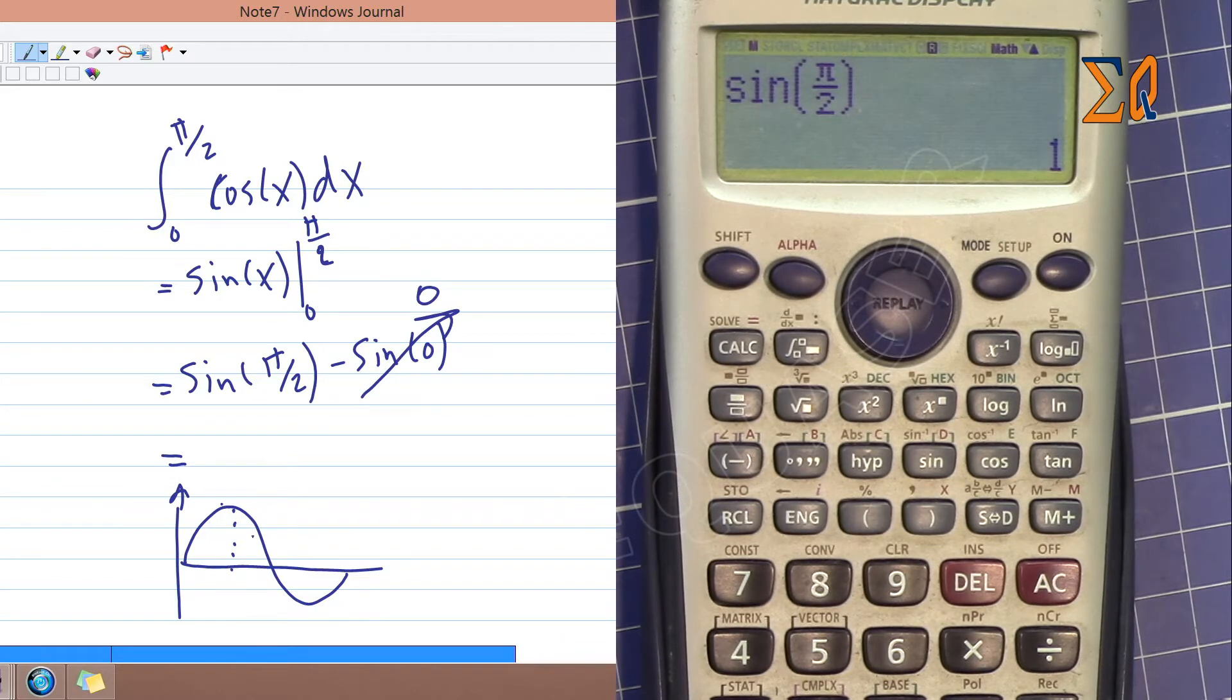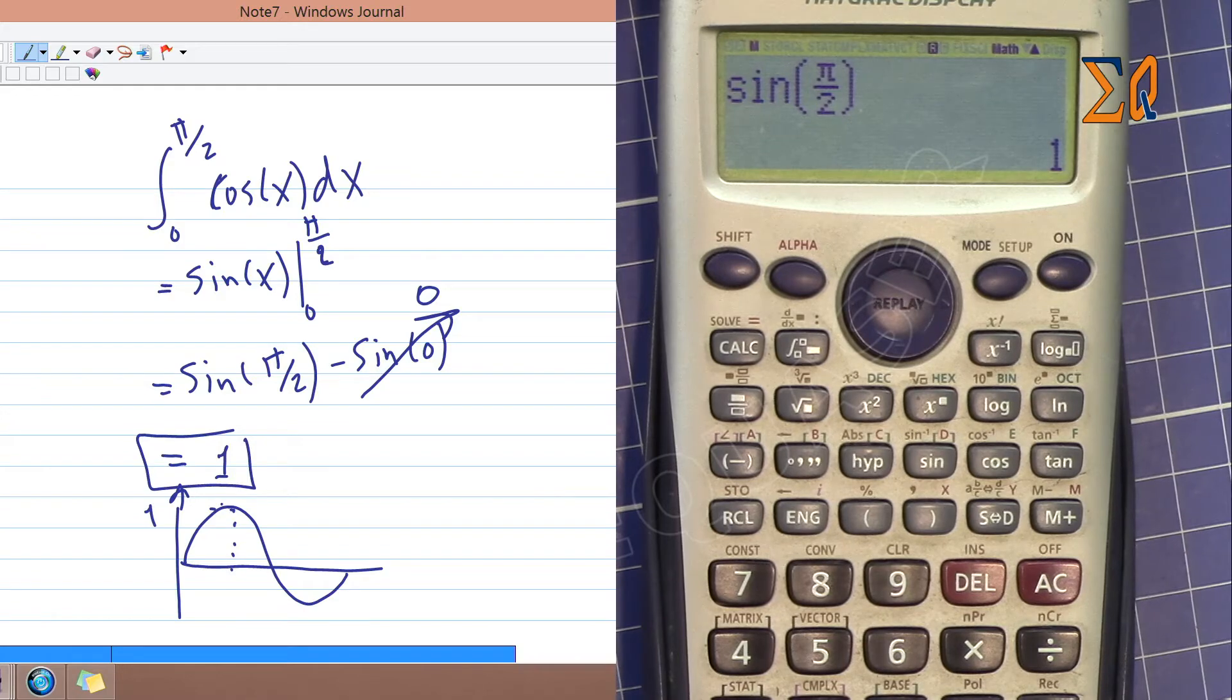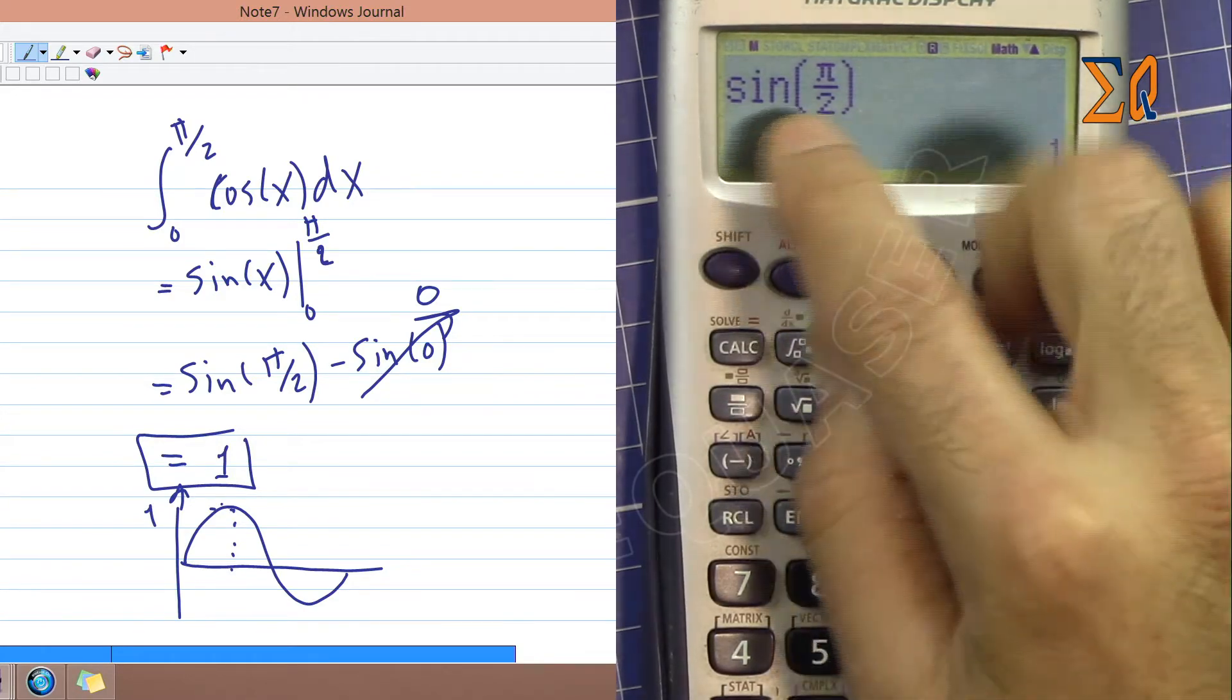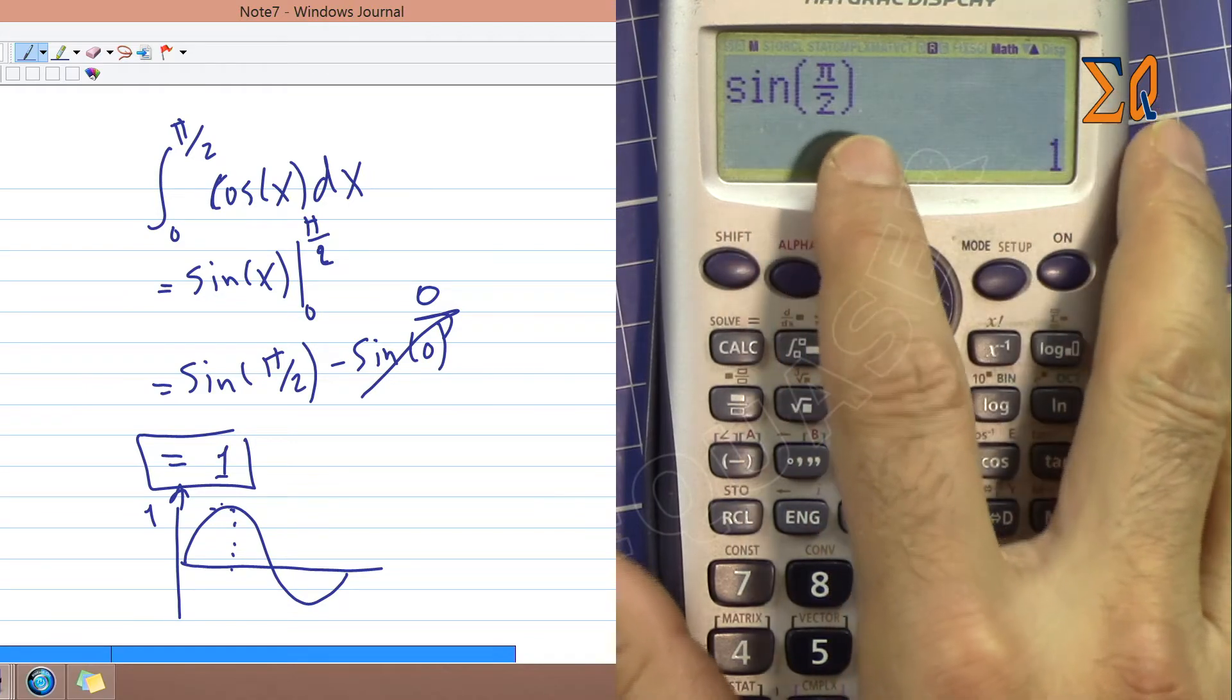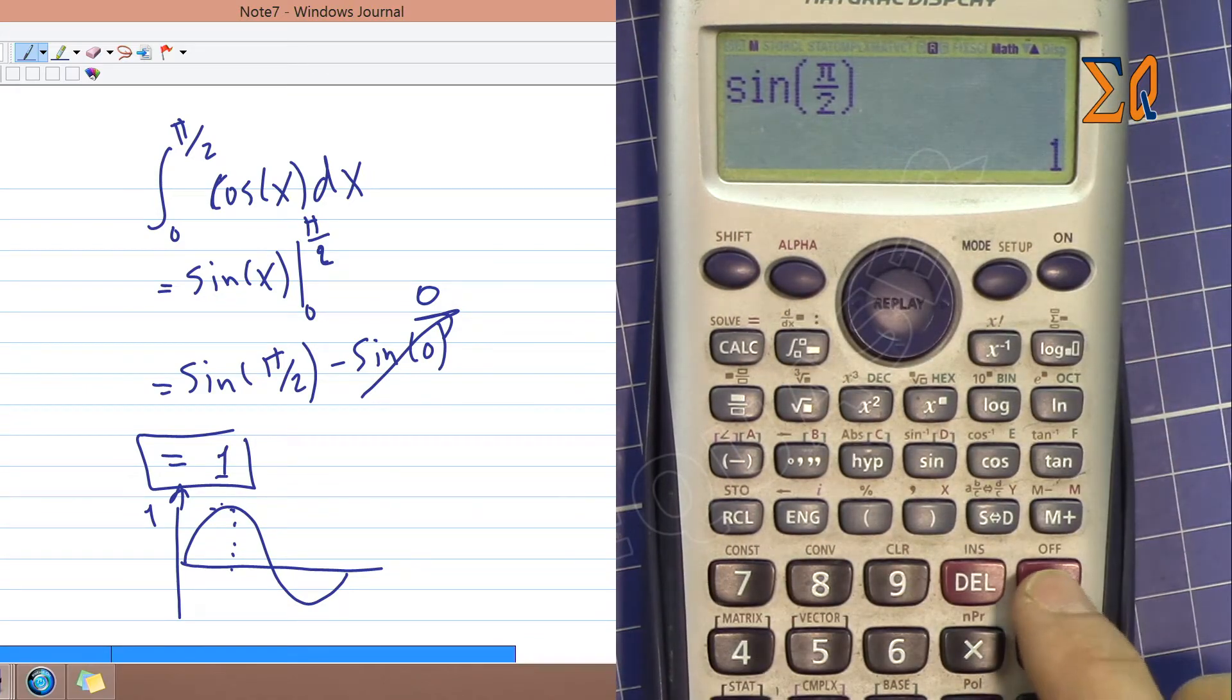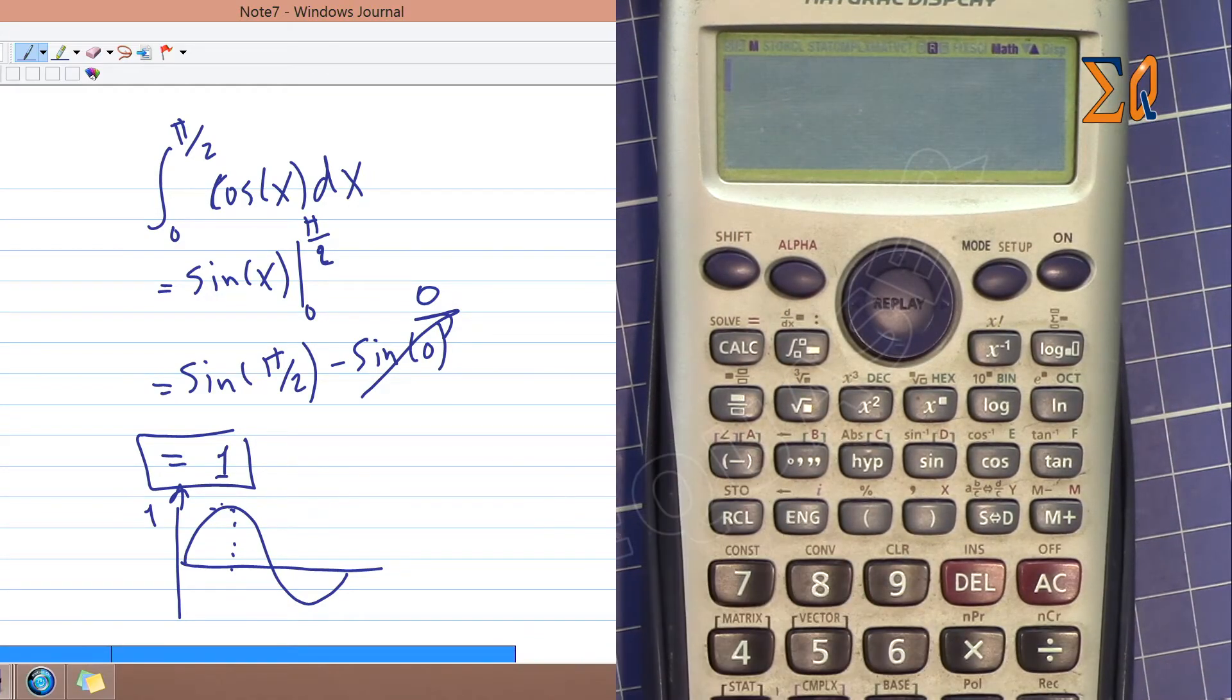That's the reason we get 1, and the answer is correct. If you check here, I put sin(π/2) and that's also 1. Make sure you use proper radian format.